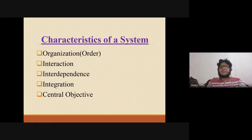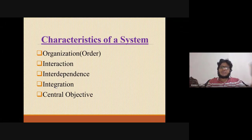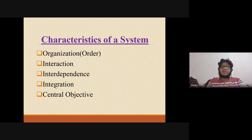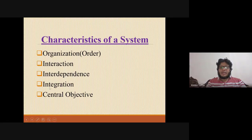A system has several characteristics. First, the system is organized — its structure is organized and well-defined. Second, the system has levels of interaction, meaning different departments and units interact with each other. Third, the system has integration, meaning all parts work properly together.